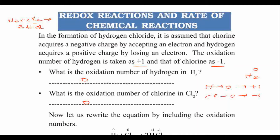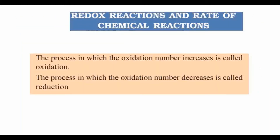In the case of hydrogen oxidation, the oxidation number increases. And in the case of chlorine, the oxidation number decreases. If oxidation number increases, oxidation occurs; if oxidation number decreases, reduction occurs. So for hydrogen, oxidation number goes from 0 to plus 1 — oxidation occurs. For chlorine, oxidation number goes from 0 to minus 1 — reduction occurs. The process in which oxidation number increases is called oxidation, whereas the process in which oxidation number decreases is called reduction.